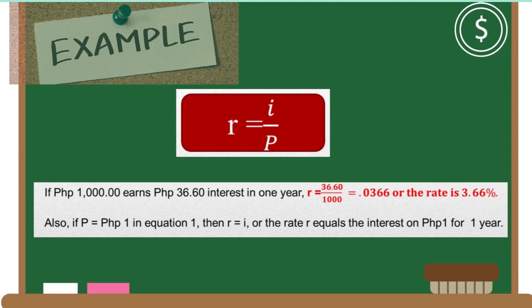Also, if P equals one peso in equation one, then r equals I, or the rate r equals interest on one peso for one year.